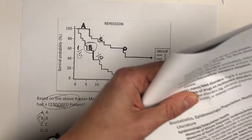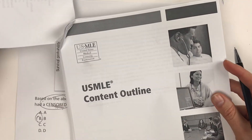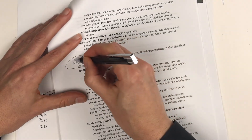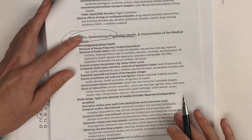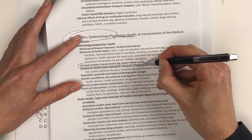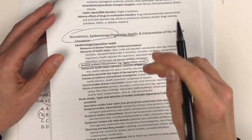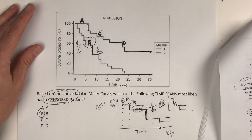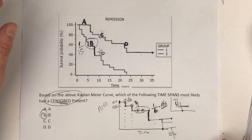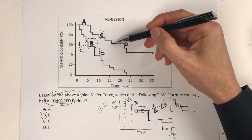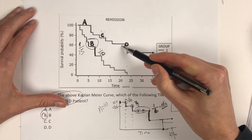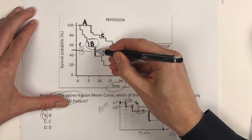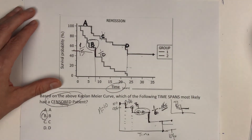If you look at the USMLE outline under biostatistics, epidemiology, and population health, survival analysis and the Kaplan-Meier curve are right there. They're basically telling you you better be familiar with this. If you understand that it's a way to estimate survival, you're comparing two groups, you know the median piece, and you know how to interpret time on these curves, you'll be just fine.